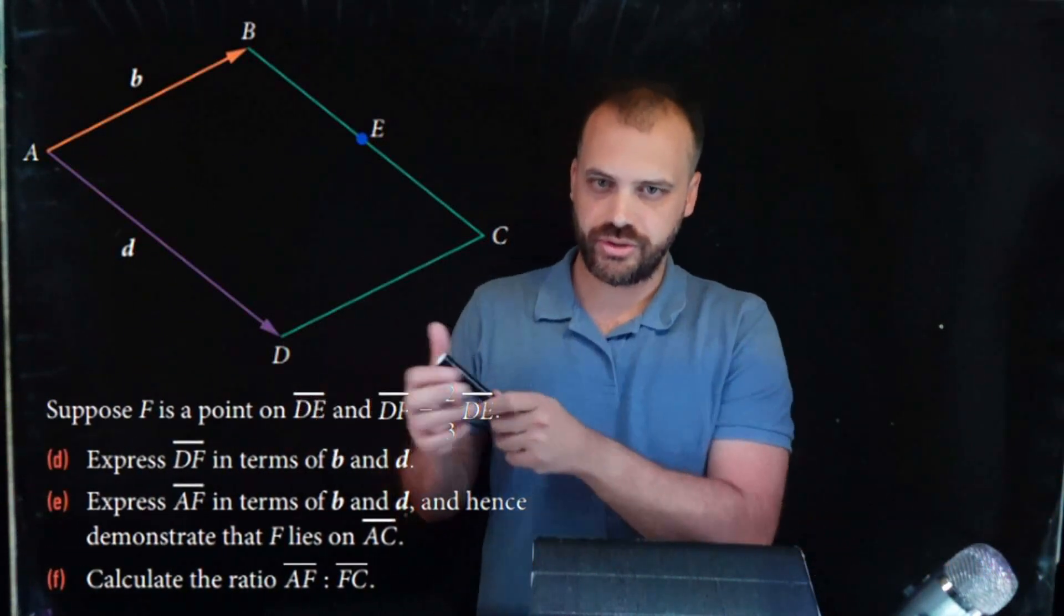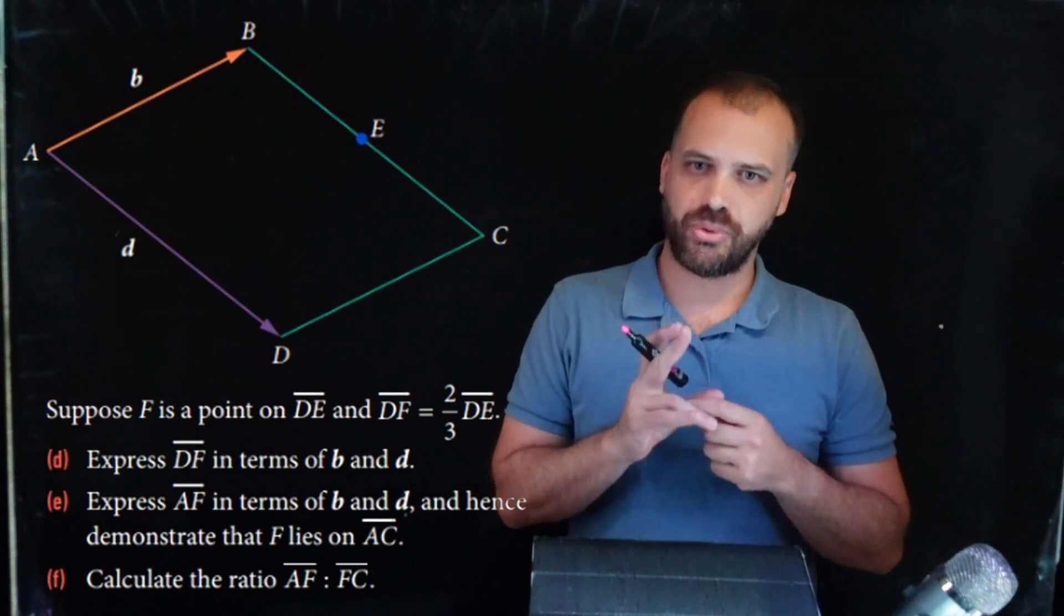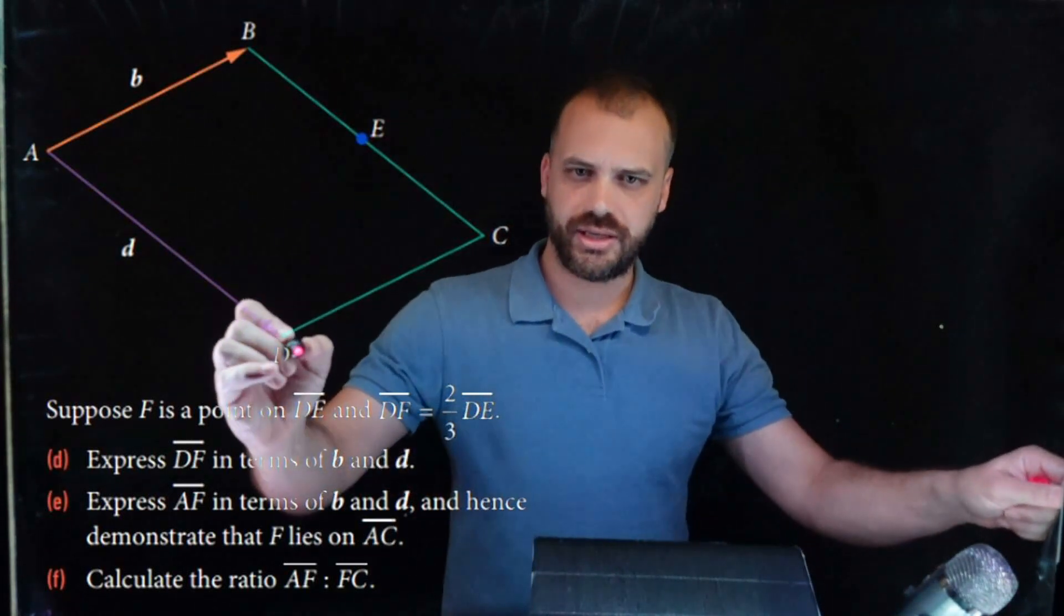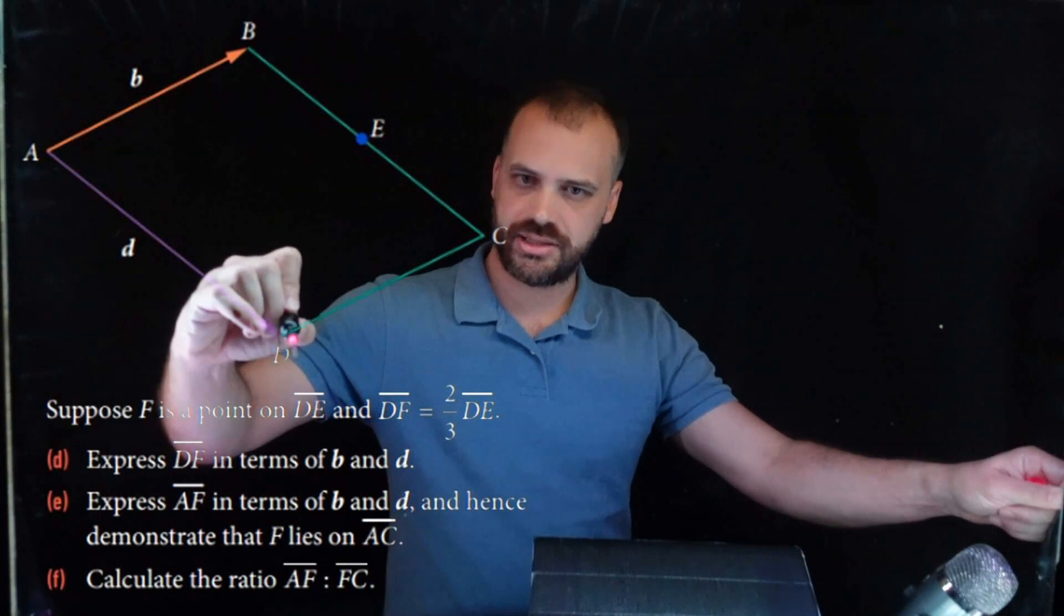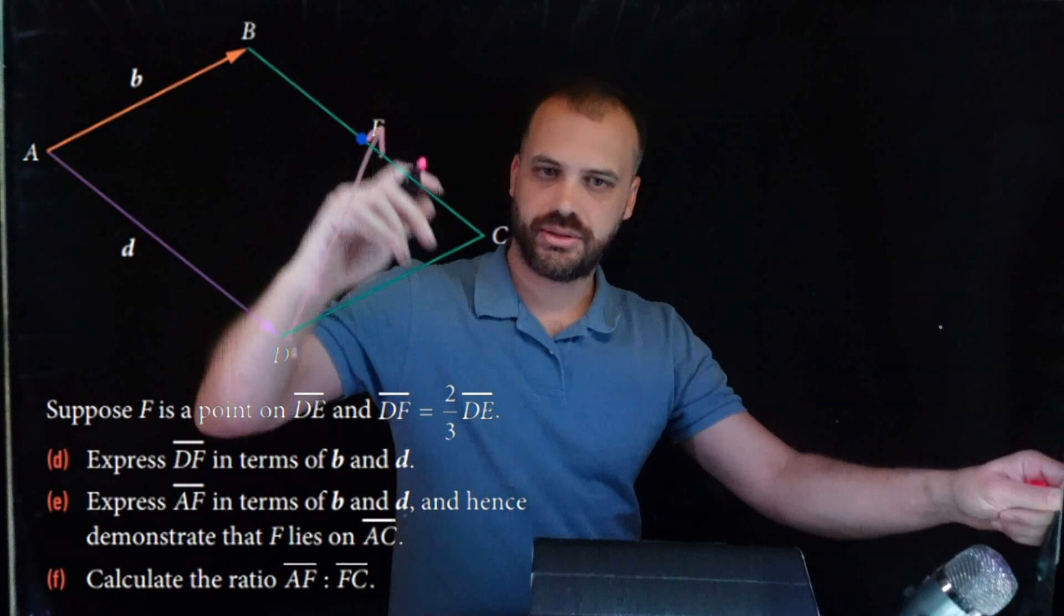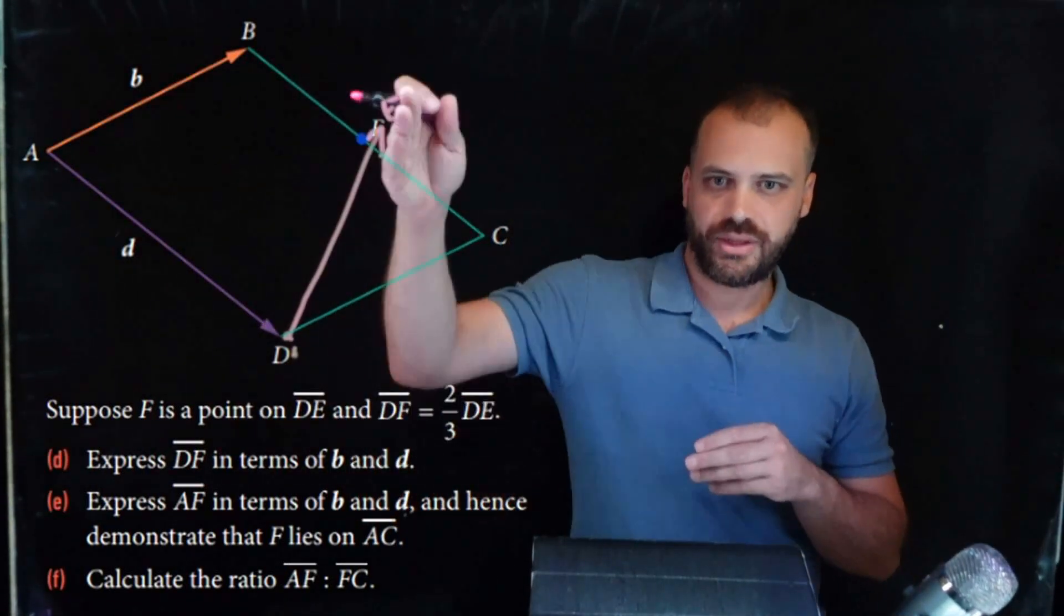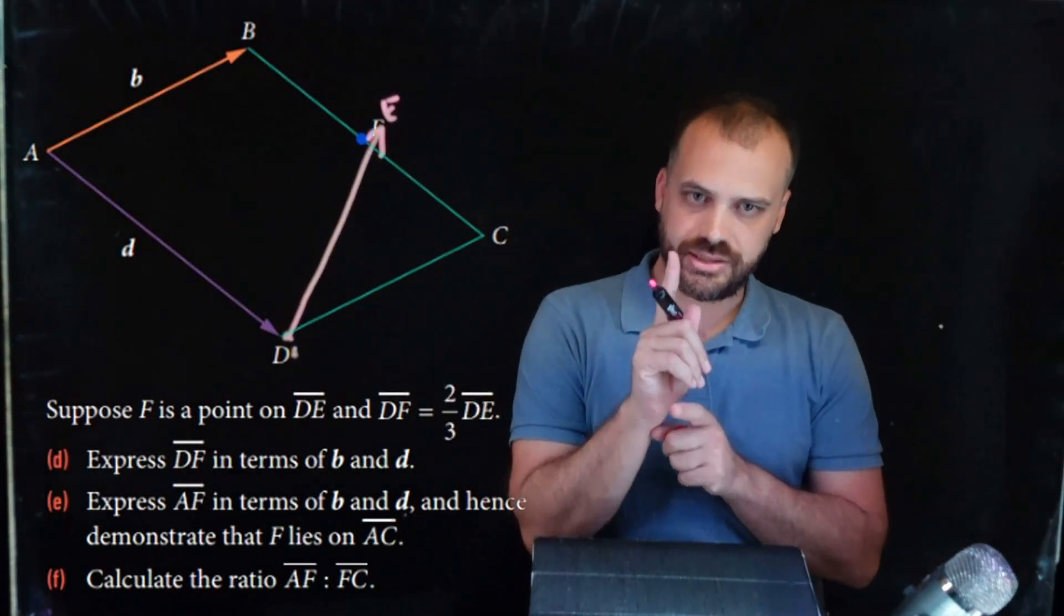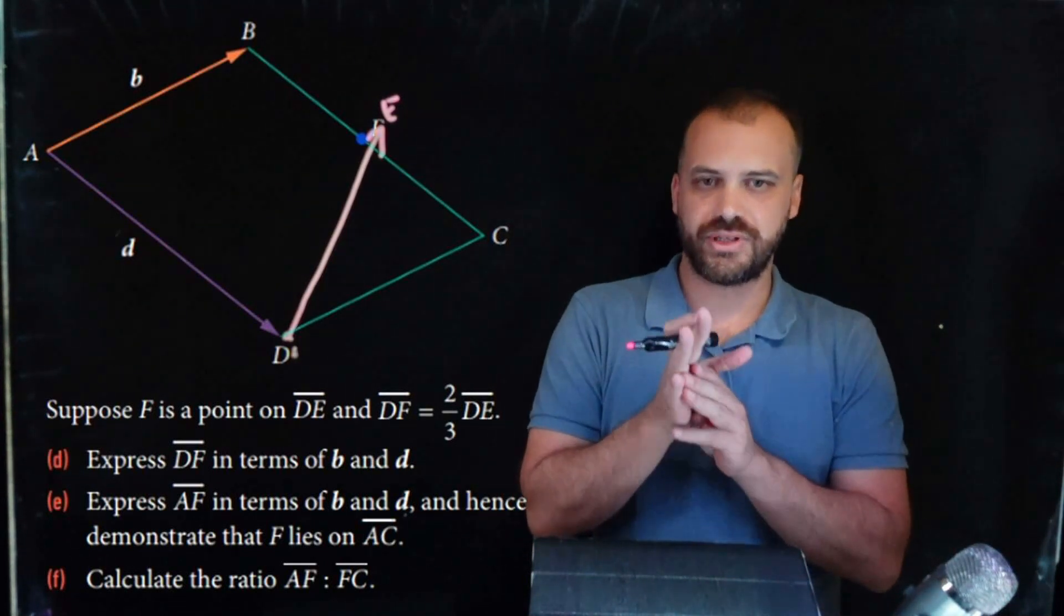Alright, so let's get rid of them. And we're going to do these ones instead. So it says, suppose F is a point on DE. What's DE? DE is a line that we can't see, but it is there. It's a line from that point up to that point. So that is vector DE, because that point there's E, the one I just drew over. F is a point on DE, and DF equals two-thirds of DE.